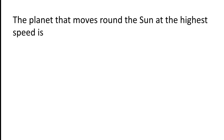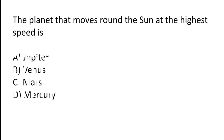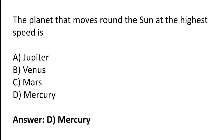The planet that moves around the Sun at the highest speed is: Jupiter, Venus, Mars, or Mercury? The correct answer is option D — Mercury is the planet that moves around the Sun at the highest speed.